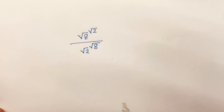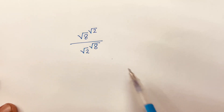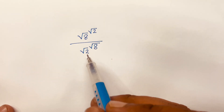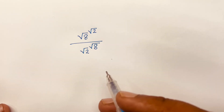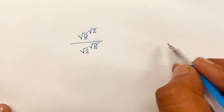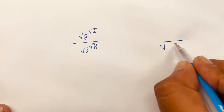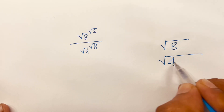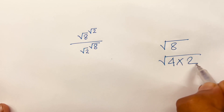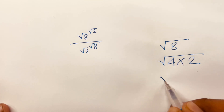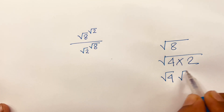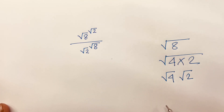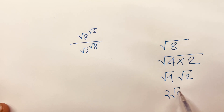Hello everyone. How to solve this math Olympiad question. The question is square root 8 to the power 2 over square root 2 to the power square root 8. First of all, square root 8 equals square root of 4 times 2, which equals square root 4 times square root 2.